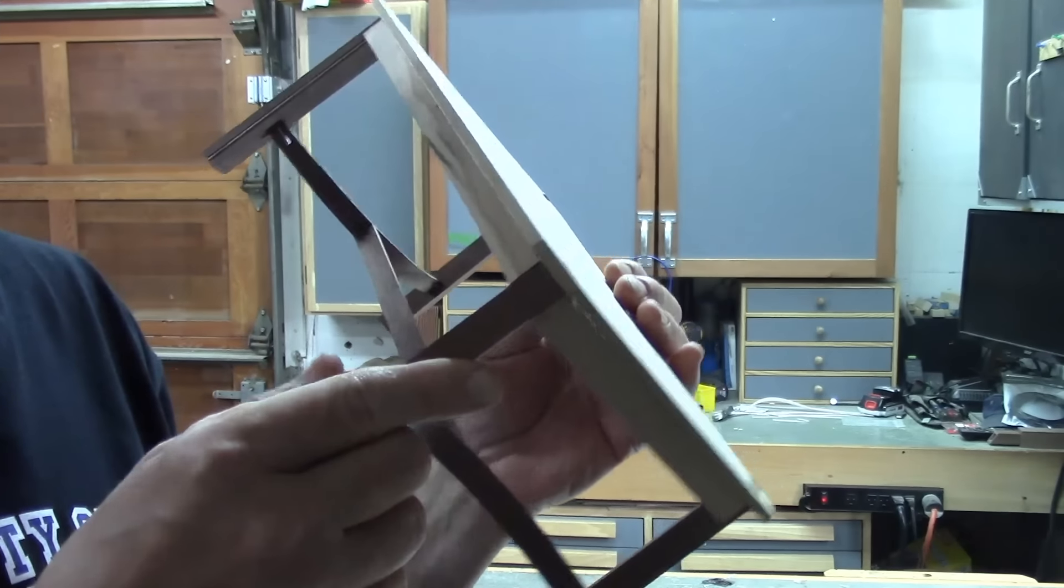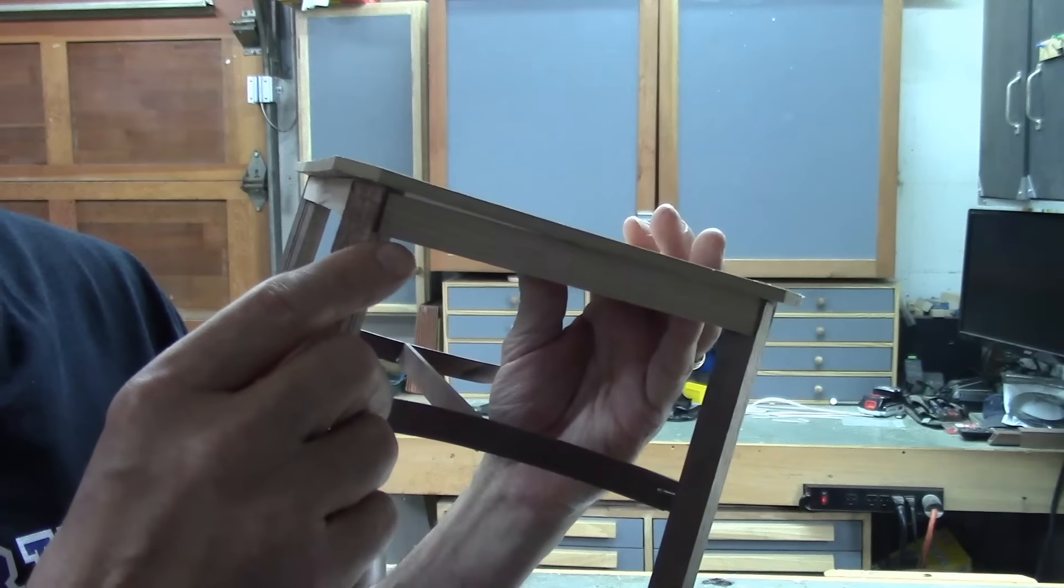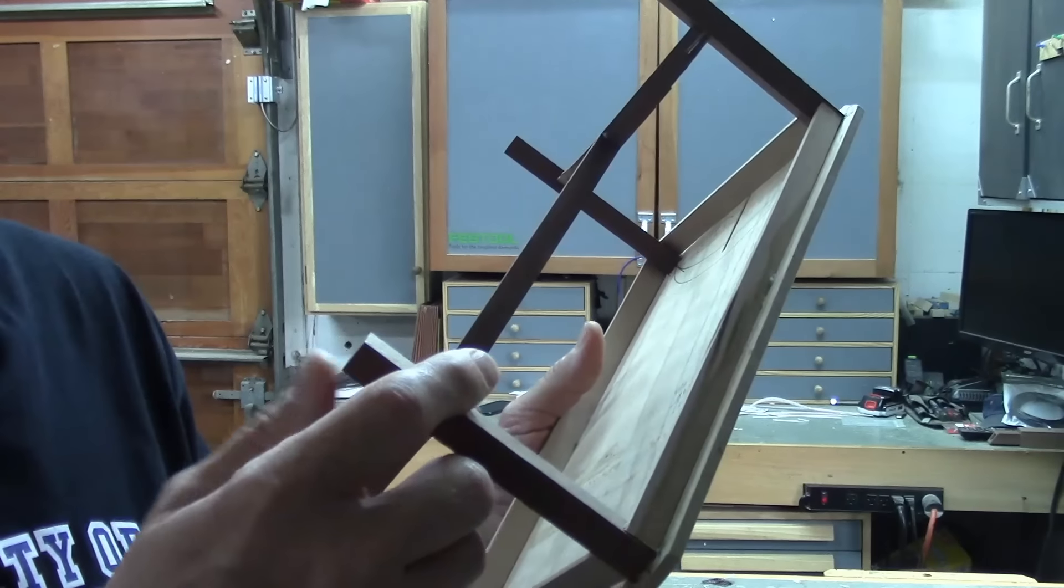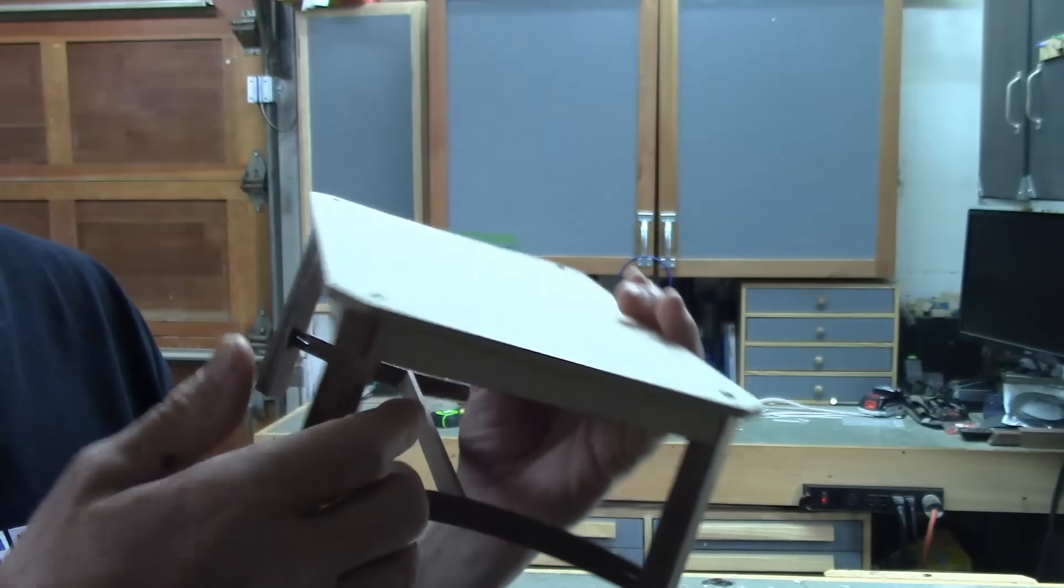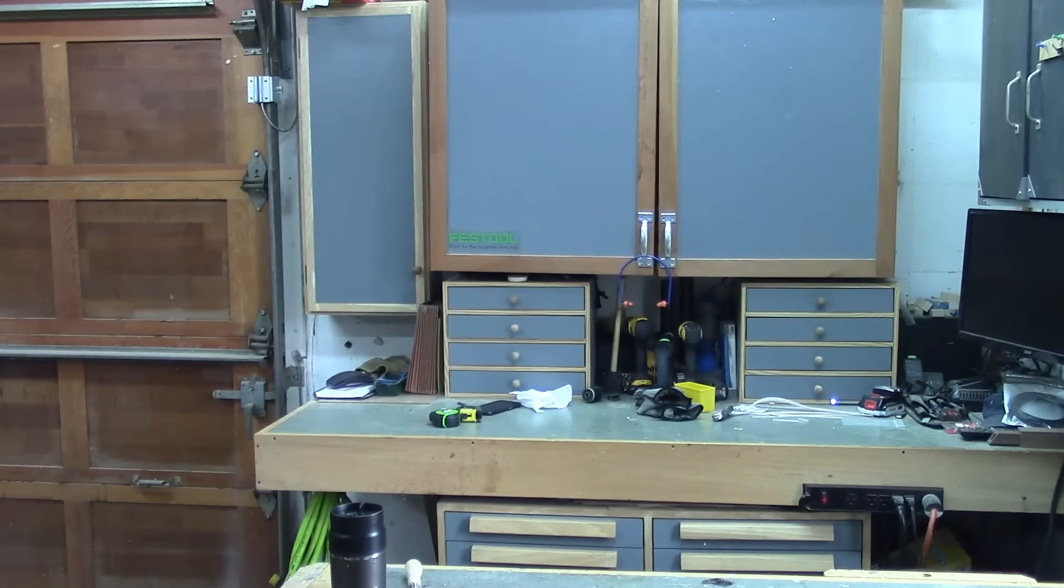This is going to represent, both these tables are going to represent a pretty significant challenge on some of the joinery and some of the construction of this. Let me know what you think. This one is B and the other one is A. Leave comments below. Let me know which one you think I should build.